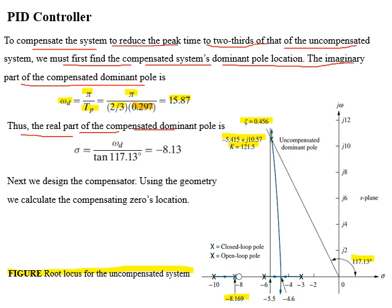Since the compensated system will also have 20% overshoot, the new dominant pole will also lie on the line of constant damping ratio. Using trigonometry on the corresponding triangle, the real part is found to be minus 8.13. The new design point, minus 8.13 ± j15.87, is not part of the existing root locus.